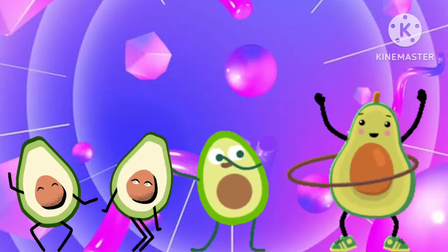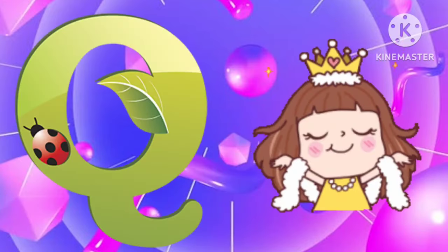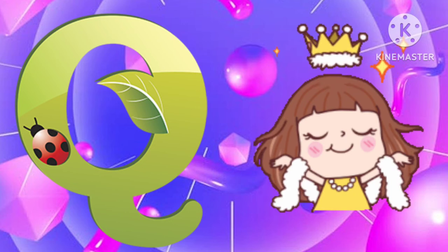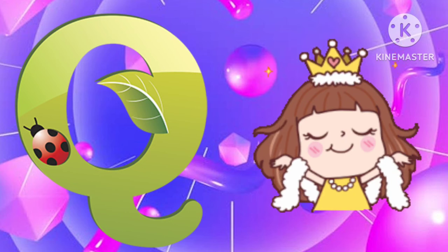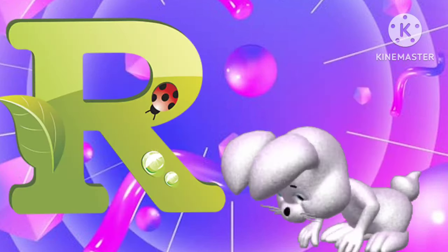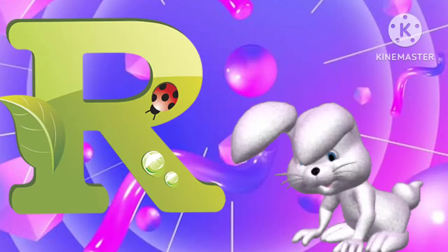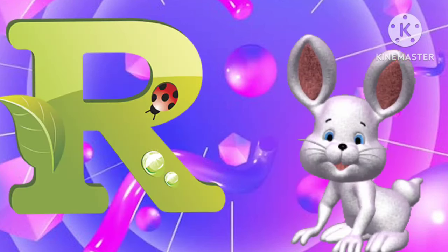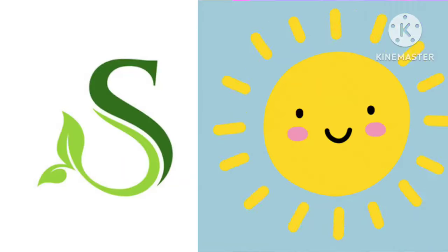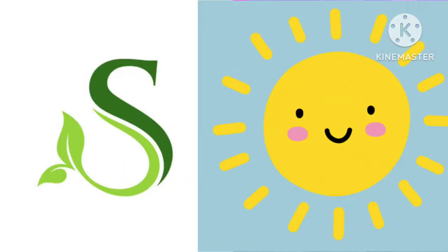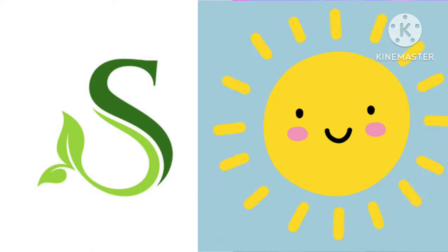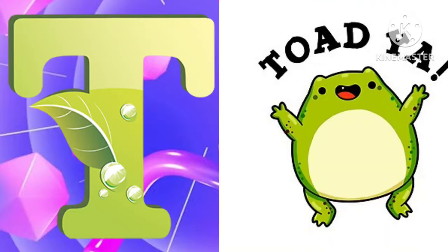Q is for queen, k-k-queen. R is for rabbit, r-r-rabbit. S is for sun, s-s-sun. T is for toad, t-t-toad.